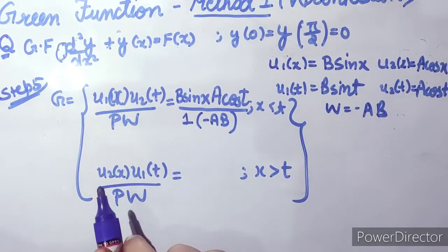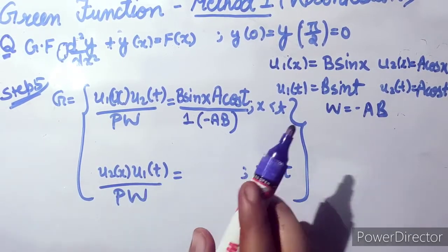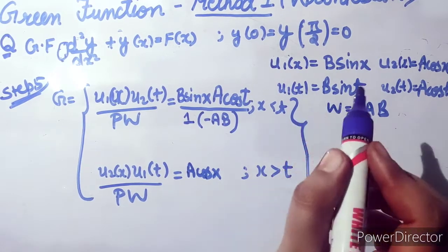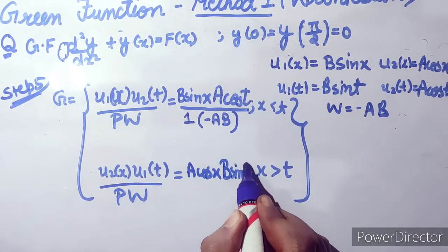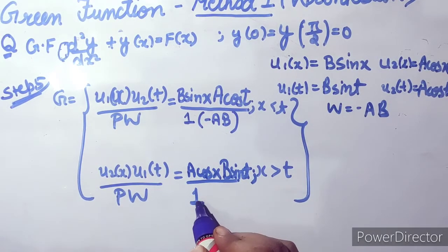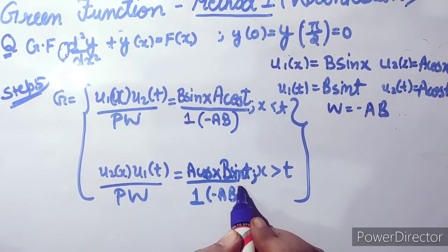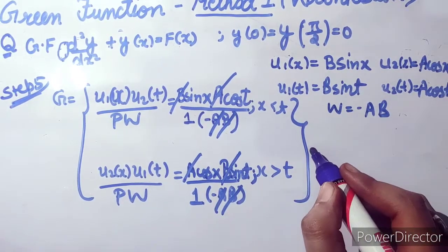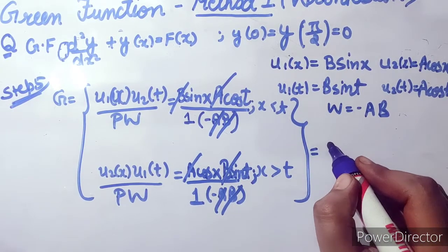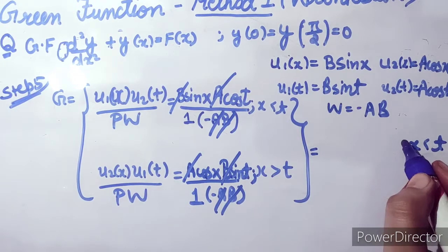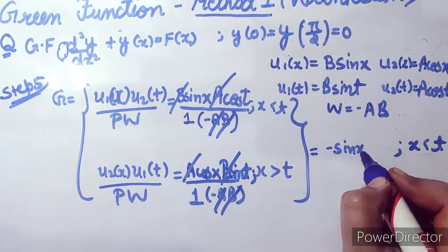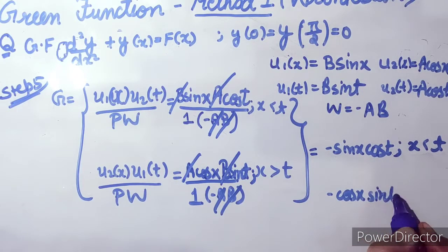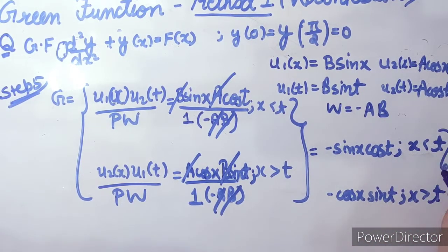Substituting all values into the Green function formula: for x < t, G = u1(x)·u2(t) / (p·W) = (B sin x)(A cos t) / (1·(−AB)) = −sin x cos t. For x > t, G = u2(x)·u1(t) / (p·W) = (A cos x)(B sin t) / (1·(−AB)) = −cos x sin t. These are the Green functions for this differential equation.